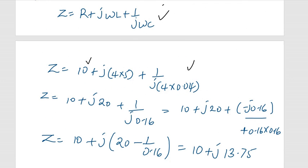When we substitute in, we will have 10 plus j times 4 times 5, plus 1 over j times 4 times 0.04.